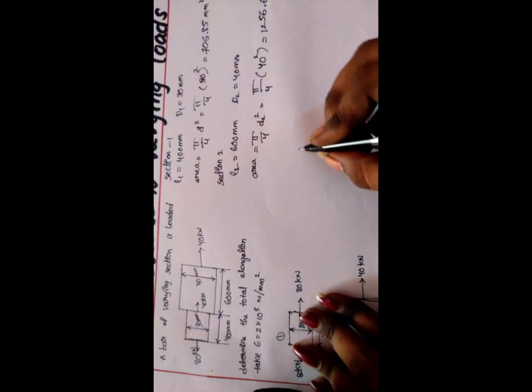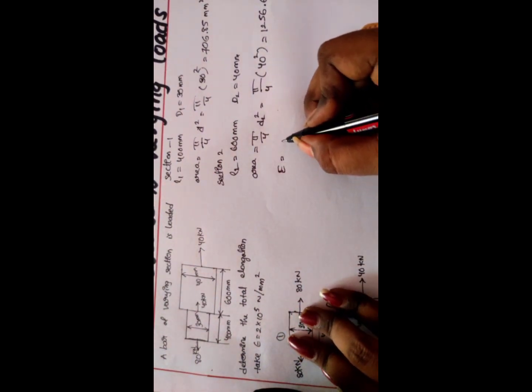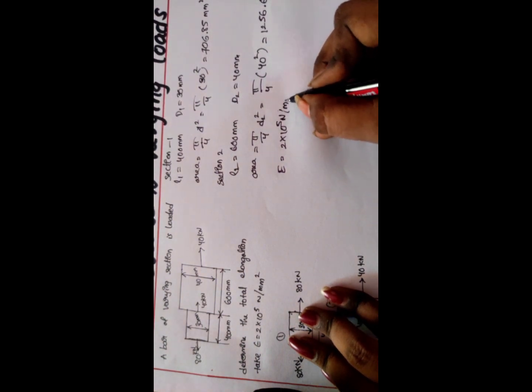Young's modulus E is equal to 2 × 10⁵ N/mm². We have to find elongation.